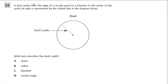Here we have a duck swimming from the edge of a circular pond to a fountain in the center of the pond. So the duck's starting here, and it is swimming to the center. Its path is represented by a dotted line in the diagram. What term describes the duck's path?